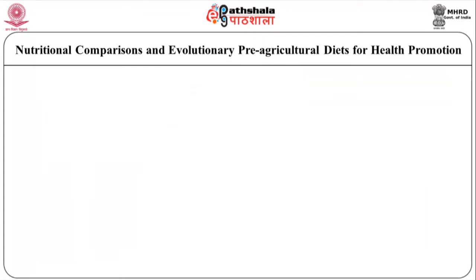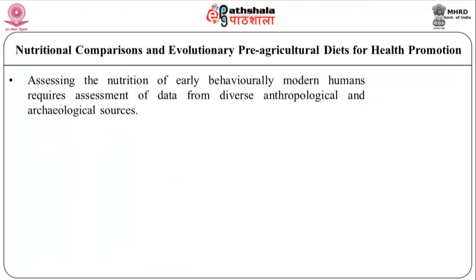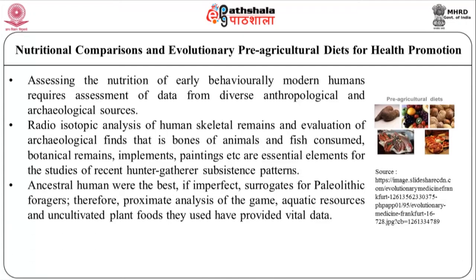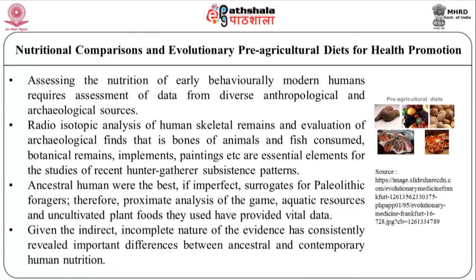Assessing the nutrition of early behaviourally modern humans requires assessment of data from diverse anthropological and archaeological sources. Radioisotopic analysis of human skeletal remains and evaluation of archaeological finds — that is, bones of animals and fish consumed, botanical remains, implements, paintings, etc. — are essential elements for the study of recent hunter-gatherer subsistence patterns. Such ancestral humans were the best, if imperfect, surrogates for Palaeolithic foragers. Approximate analysis of the game, aquatic resources, and uncultivated plant foods they used has provided vital data. Given the indirect and incomplete nature of the evidence, it has consistently revealed important differences between ancestral and contemporary human nutrition.